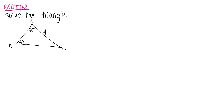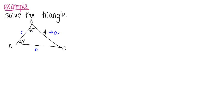We have a non-right triangle and we are asked to solve it. We are given angle B, angle A, and the side length opposite angle A, which is side a. Side b is opposite angle B and side c is opposite angle C. We can use law of sines here because we have everything about angle A. The things we're missing are angle C, side length b, and side length c.